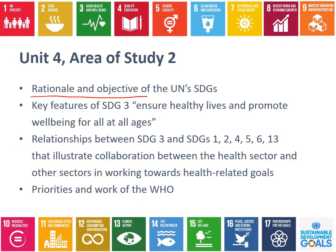Today we've looked at the rationale and objectives of the Sustainable Development Goals, giving you an overview of all 17 goals. Over the next few weeks, we'll be focusing on SDG number three — Good Health and Wellbeing — which is an obvious choice for this subject. Then we'll look at the relationships between SDG three and goals one (No Poverty), two (Zero Hunger), four (Quality Education), five (Gender Equality), six (Clean Water and Sanitation), and thirteen (Climate Action). Finally, we'll look at the World Health Organization and how they're trying to achieve these goals. See you on Friday.